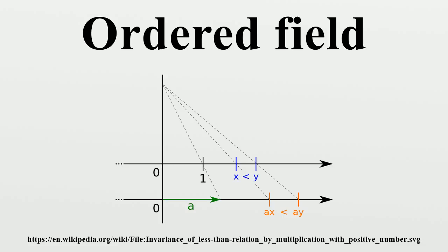If A less than B then A plus C less than B plus C, and if 0 less than A and 0 less than B then 0 less than A times B. The symbol for multiplication will be henceforth omitted.